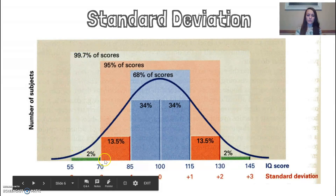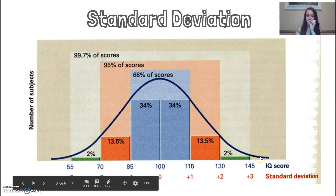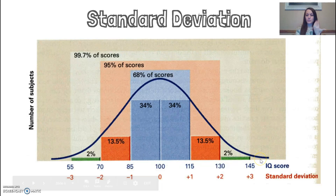So if you score an IQ anywhere in that range, that's 99.7% of people. If you score below a 55 or above a 145, you are in the very top or bottom percentages — only 0.3% of people are out there. It's just a way for us to understand how far away you are from average.